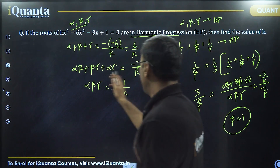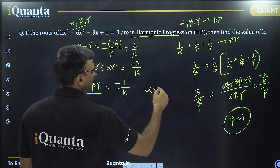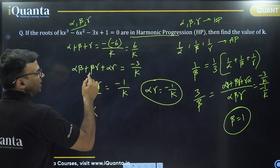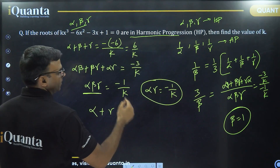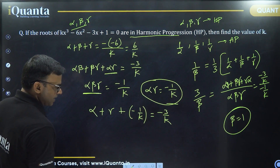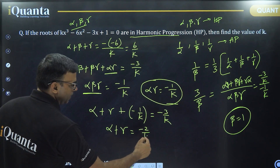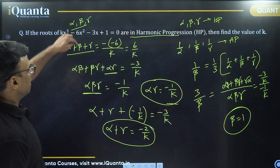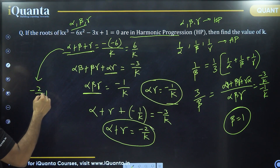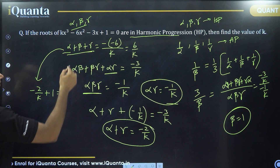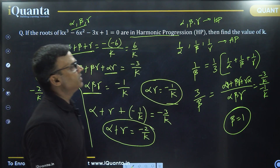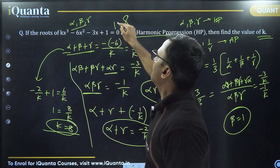Now if beta is equal to 1, substituting into the product expression gives alpha gamma equal to minus 1 by k. From the pairwise sum: alpha plus gamma plus alpha gamma equals minus 3 by k. Substituting alpha gamma as minus 1 by k, alpha plus gamma equals minus 2 by k. Now using the sum of roots: alpha plus gamma plus beta equals 6 by k. With beta equal to 1 and alpha plus gamma equal to minus 2 by k, we get minus 2 by k plus 1 equals 6 by k. So 1 equals 8 by k, giving k equal to 8.